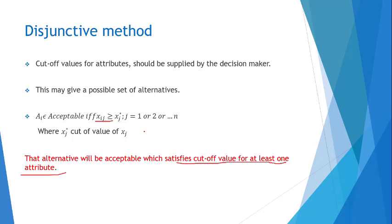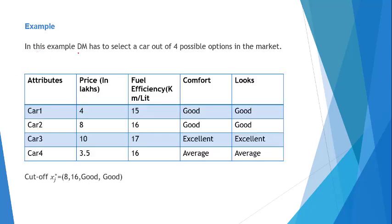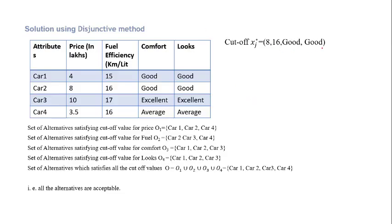We will understand this with the help of the same example. The decision maker has to select a car out of four possible options. The attributes are price, fuel efficiency, comfort, and looks; options are car 1, car 2, car 3, and car 4. The cutoff values are: 8 for price, 16 for fuel efficiency, good for comfort, and good for looks. For price cutoff of 8, car 1 and car 2 are selected; car 3 is not selected because 10 is higher than 8 — higher price is less preferable.